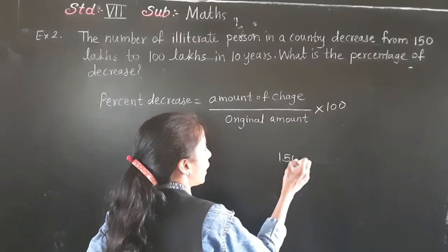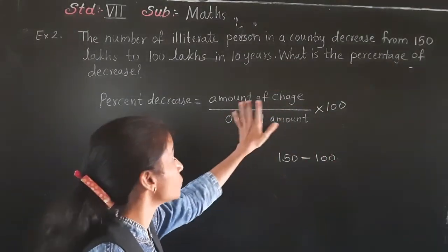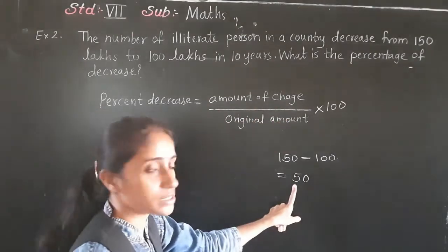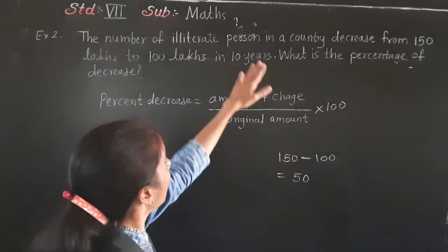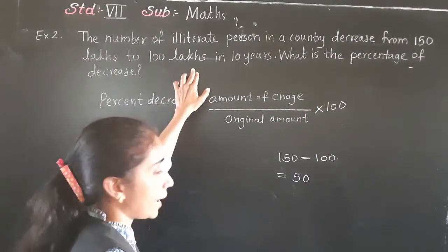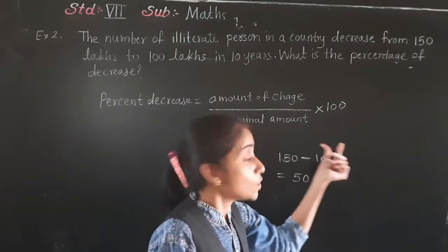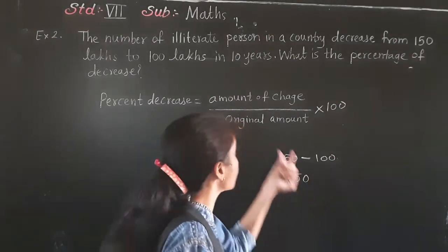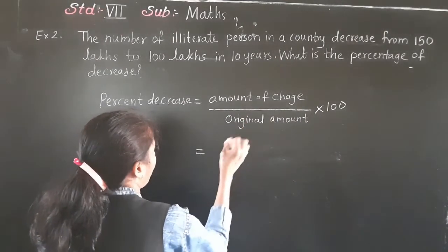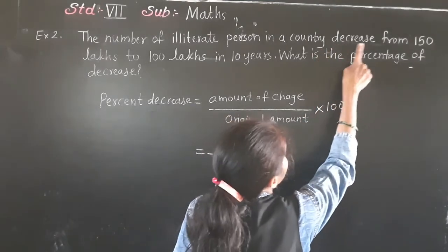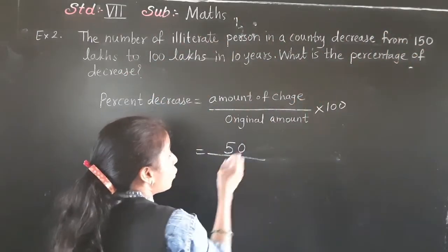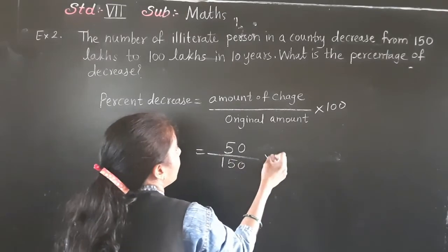150 minus 100 gives 50, so the amount of change is 50. And what is the original amount? It decreased from 150 lakhs to 100 lakhs, so the original amount is 150. Multiply by 100.